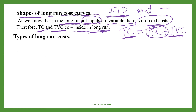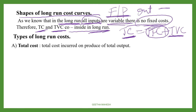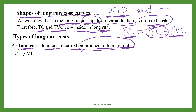Now let us discuss different types of long run cost. As there won't be any total fixed cost, we will have only a few types of long run cost. The first is total cost — it is the total cost incurred on production of total output, or the total cost incurred to produce total output. Total cost is equal to the summation of marginal cost. How many units you are producing and how much cost you are incurring to produce those units — that is total cost.